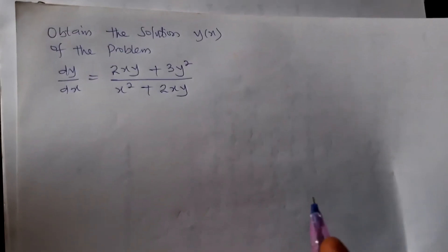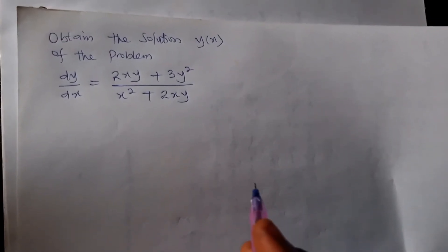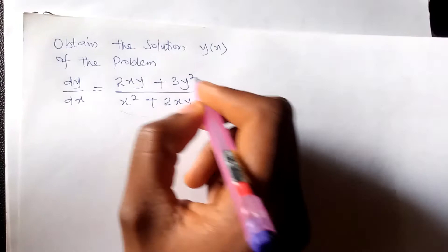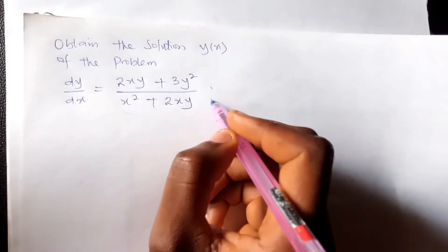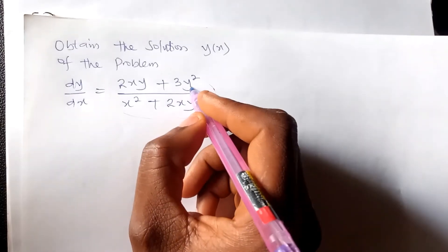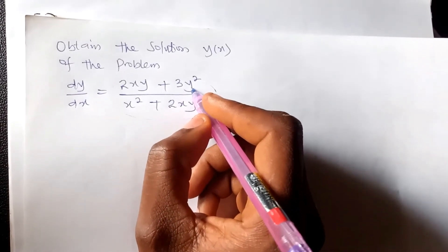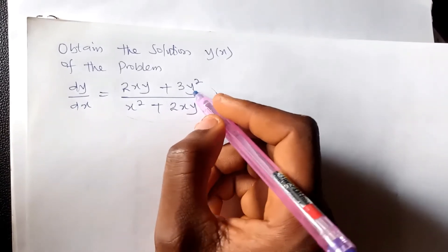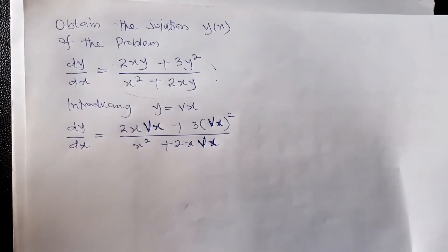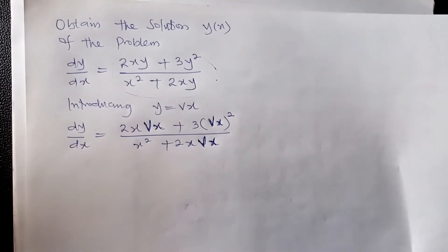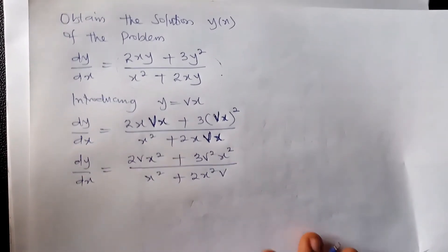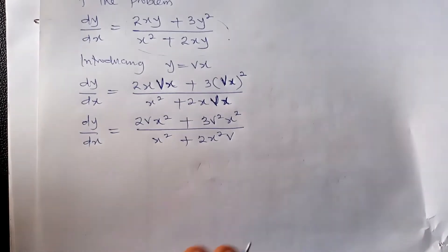Welcome again. We want to solve another problem and find the solution y(x). The first step is to look at f(x, y), notice that we cannot separate the variables, and verify that if we replace y with vx the independent variable x can be removed. So I introduce y equals vx and expand.